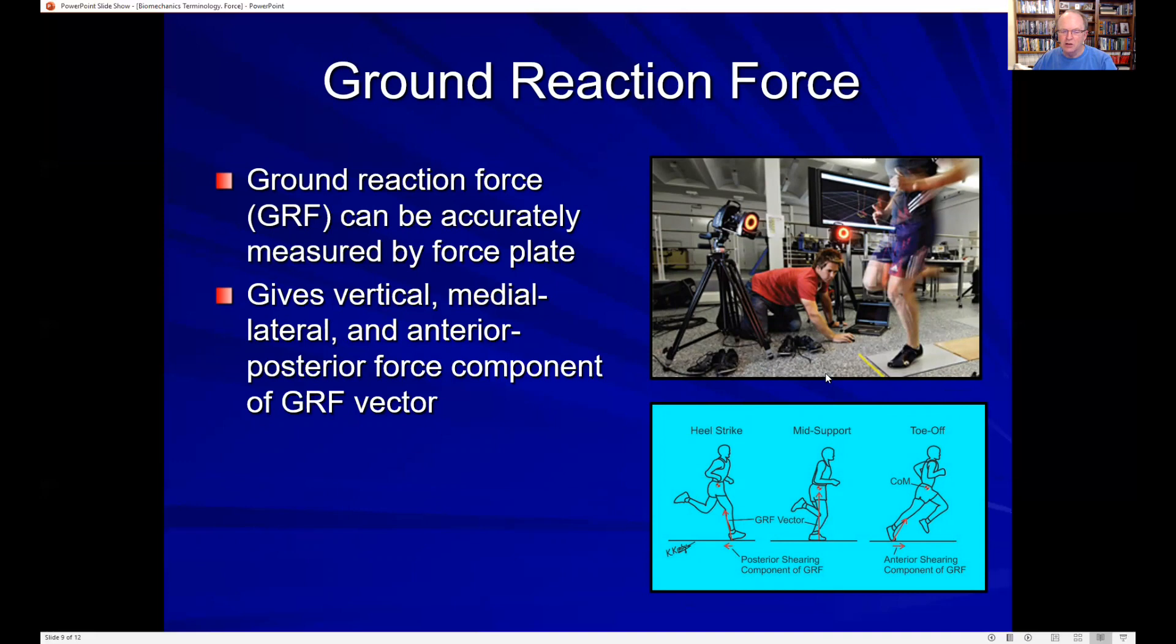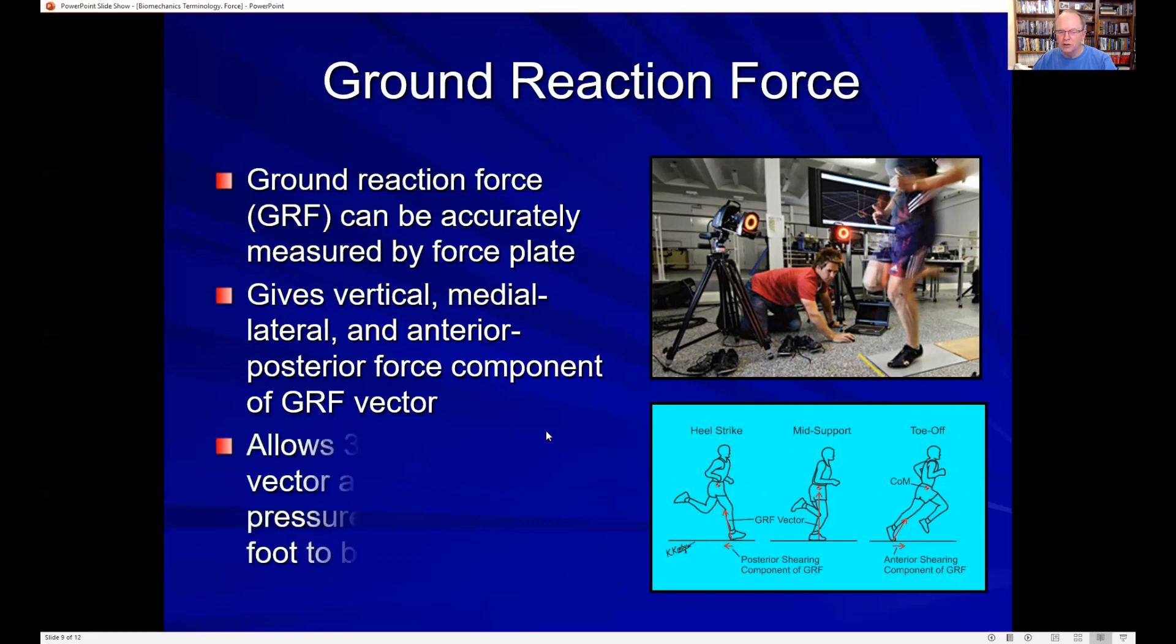This force plate will give us a ground reaction force vector with the vertical component, that component that goes straight up and down, the anterior posterior shear component, that component that goes forwards or backwards relative to the foot and ground, and also a medial lateral component, which would be going medial and lateral. So when we combine those three components, this allows us to determine not only the three dimensional location of this ground reaction force vector. In early support phase of running, the ground reaction force vector points posteriorly. In mid support, it points basically straight upwards. And then in propulsion, the ground reaction force vector is pointing forward. This is how the ground reaction force vector changes in not only direction, but also spatial location or 3D location.